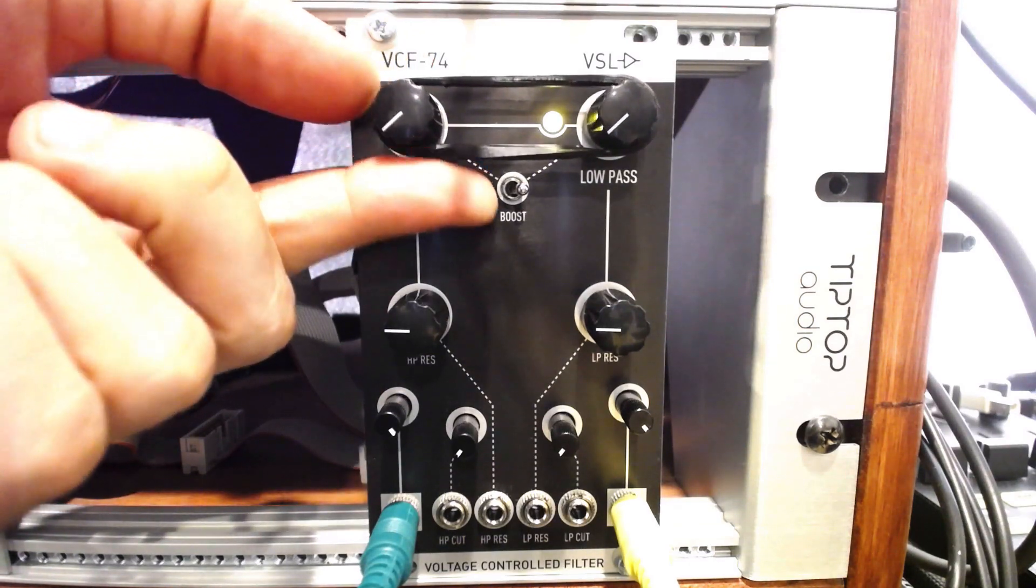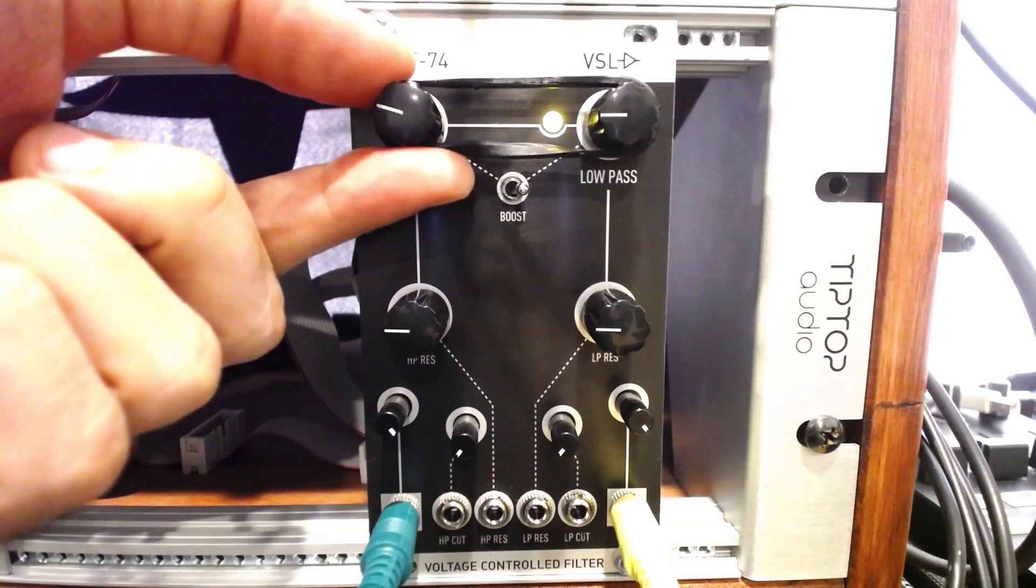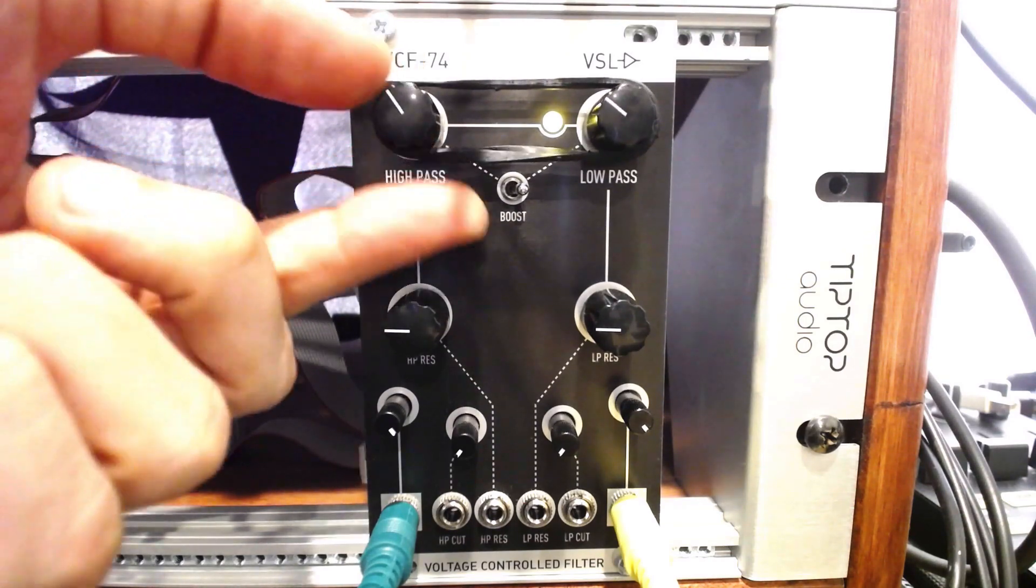Now turning one knob transfers that motion to another, getting the effect of a moving bandpass filter on this particular module.